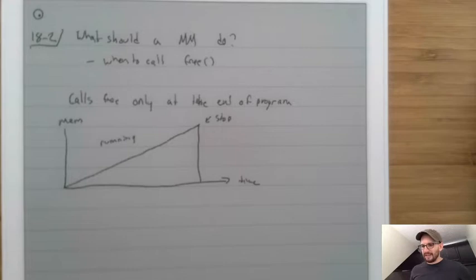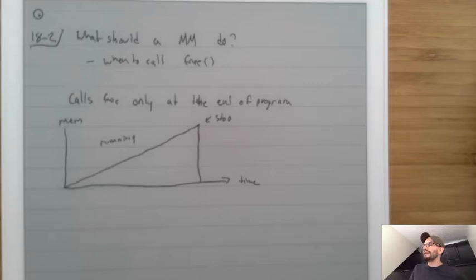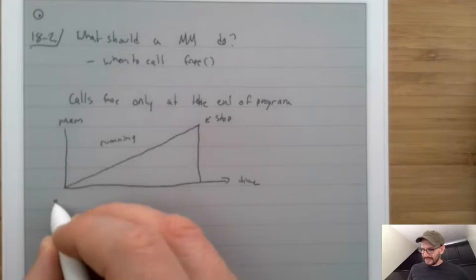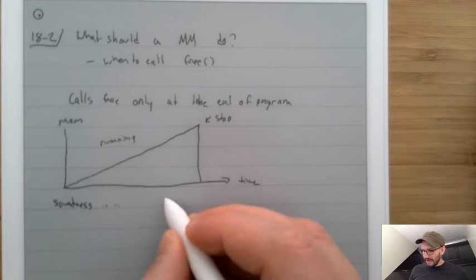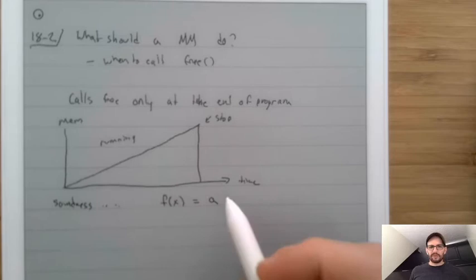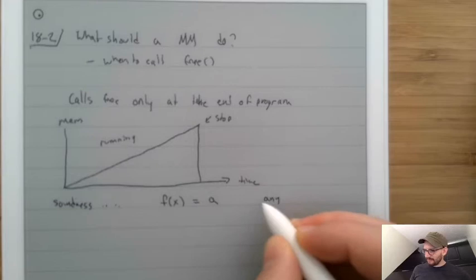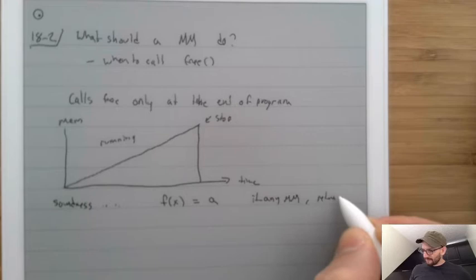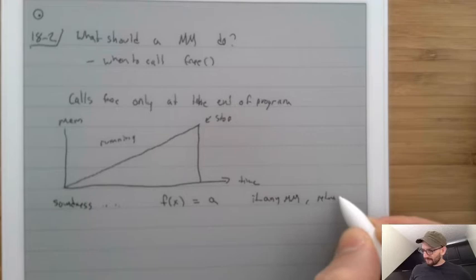That memory manager is not a good one, but it is definitely a correct one — and this should make us think about what it means to be a correct memory manager. In memory management, we talk about soundness as correctness. The key idea is: if with infinite memory your program returns answer A, then any sound memory manager must also return A. If a memory manager returns B, it's wrong.